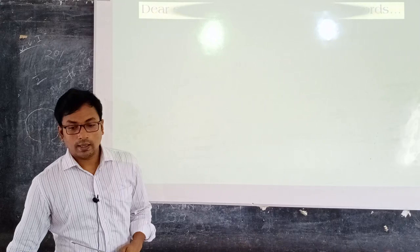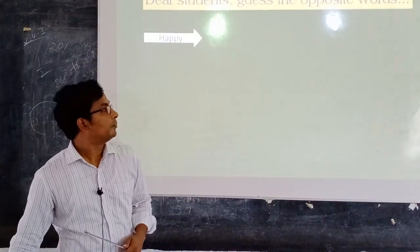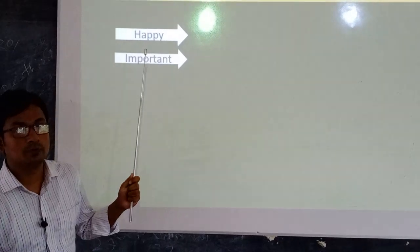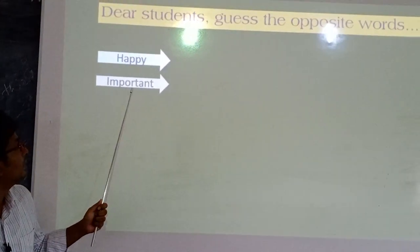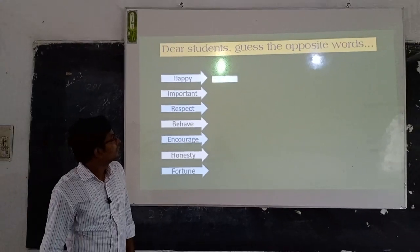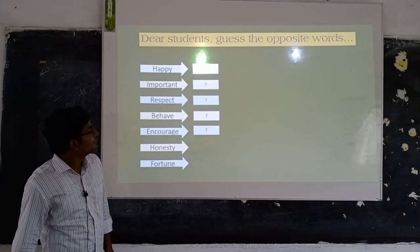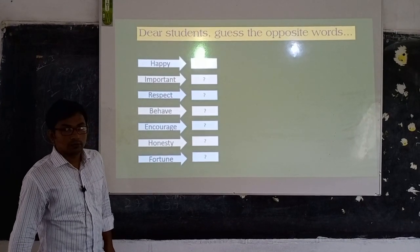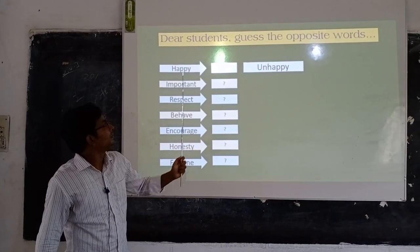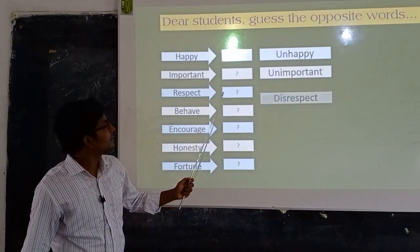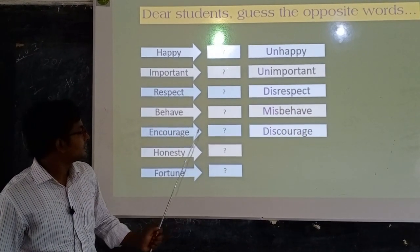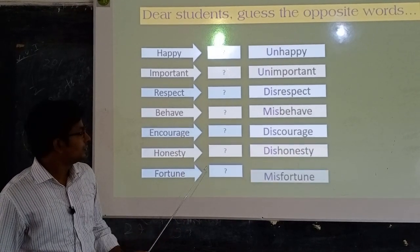You have also another game, dear students. You have to guess the opposite word of the given words. There are some words: happy, important, respect, behalf, encourage, honesty, fortune. I hope you will think about the opposite words. Now we can see the answers: happy — unhappy, important — unimportant, respect — disrespect, behalf — misbehaving, encourage — discourage, honesty — dishonesty, fortune — misfortune.